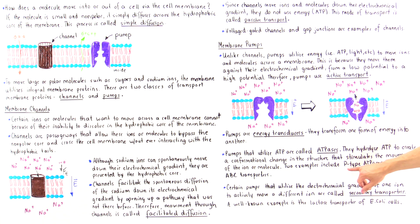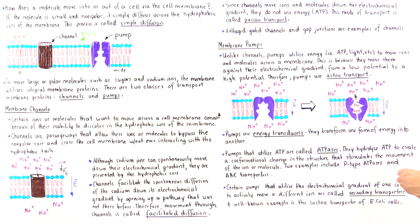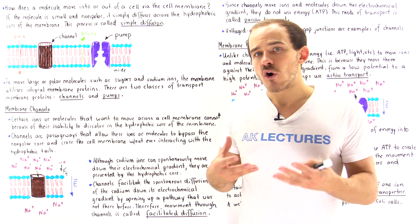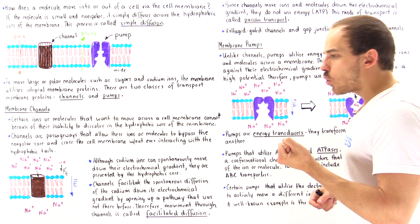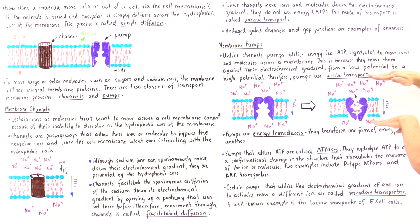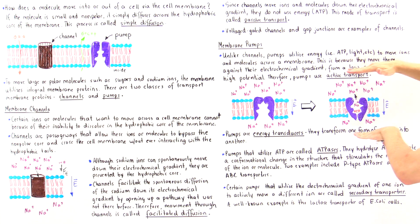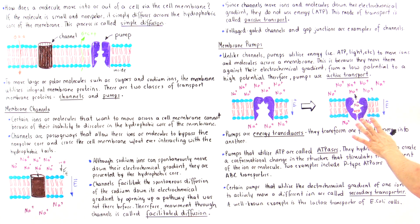The pump uses energy stored in the chemical bonds of ATP to move sodium against the electric field lines, against the electrochemical gradient. Two types of ATPases we'll examine are the P-type ATPase and the ABC transporter. All types of pumps are energy transducers — they transform energy from one form to another. In the case of ATPases, they transform energy stored in ATP's chemical bonds into energy stored in establishing an electrochemical gradient.